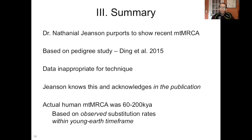To summarize: Dr. Nathaniel Jensen purports to show a recent mitochondrial most recent common ancestor of around 6,000 years ago. He made this determination based on pedigree data from Ding et al. 2015. But as I've shown, those data are completely inappropriate for this technique — and what's more, Jensen knows this and acknowledges it in that very publication. If you do the math correctly, the actual human mitochondrial most recent common ancestor, Mitochondrial Eve, existed between 60 and 200,000 years ago, based on observed substitution rates calibrated within a young earth time frame. Young earth creationists have no reason to doubt that number except that it directly refutes the young earth timeline.